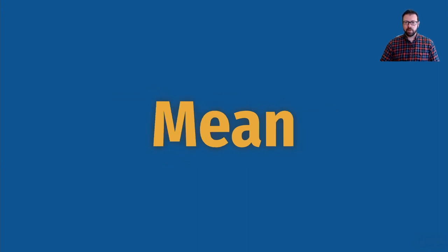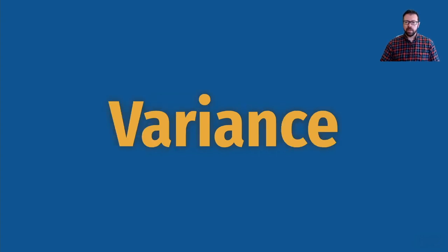The mean. When we analyse data we mostly focus on this property of our dataset. There are other important properties of data however, and in the short case study I want to talk about today I'm going to look at the variance and how we can use statistical models to investigate changes in the variance of an ecosystem over time.